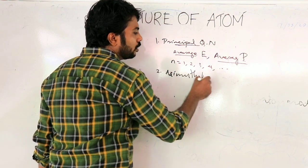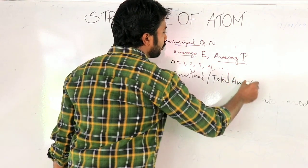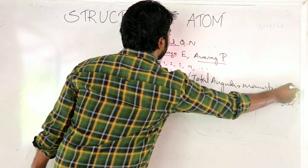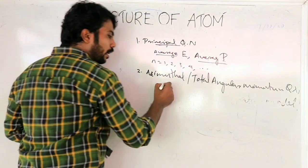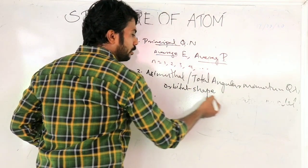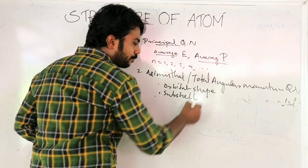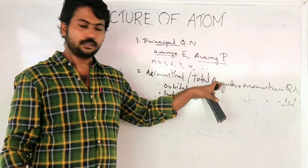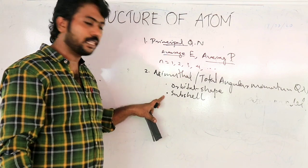The second is the Azimuthal number, also called the total angular momentum number. It represents the shape of the orbital. The orbital shape is determined along the axis.